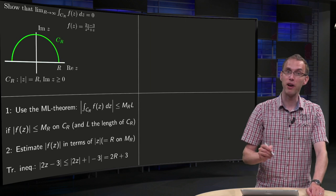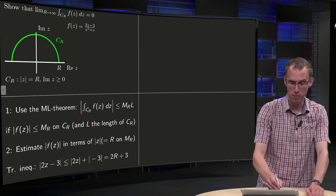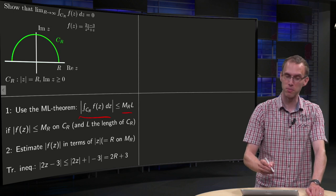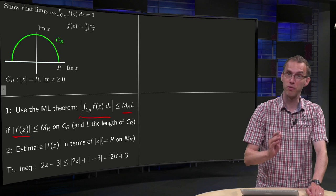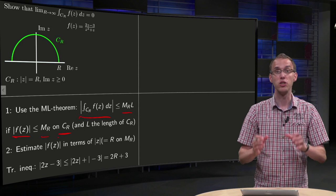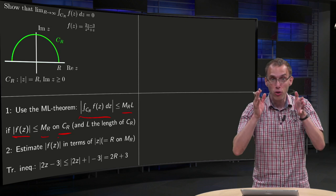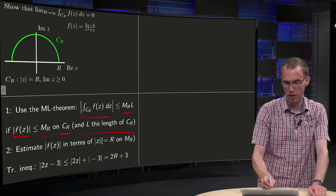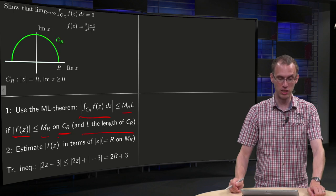First up we use the ML theorem that says that the norm of the integral along CR is smaller or equal than MR times L if the norm of f(z) is smaller or equal than MR on CR. And L is the length of CR. That last part is easy.